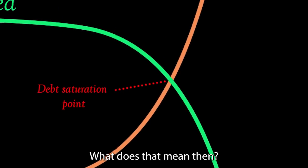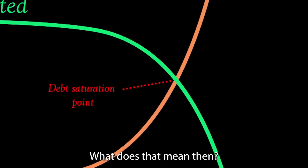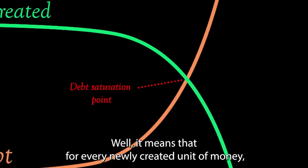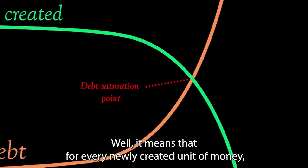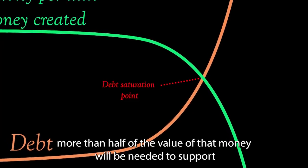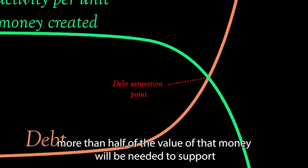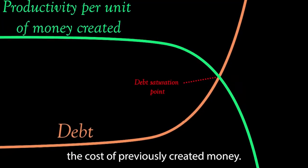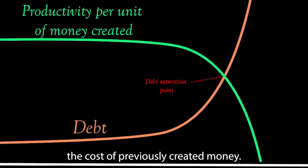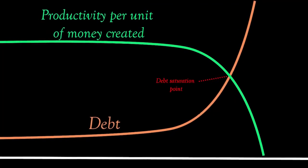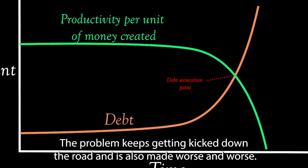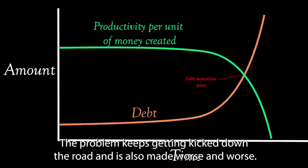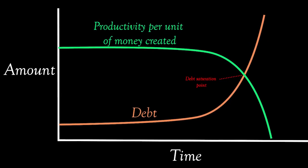What does that mean then? It means that for every newly created unit of money, more than half of the value of that money will be needed to support the cost of previously created money. The problem keeps getting kicked down the road, and is also made worse and worse.